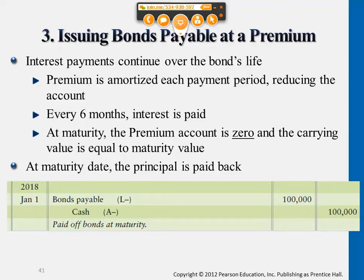For bonds, all three cases, the critical entry really is the interest entry. If companies issue the bond at par value — meaning the stated interest rate is the same as the market interest rate — then every half a year when they journalize interest, interest expense will be the same as the cash interest they're paying: $4,500. Because in the beginning there weren't any discounts or premiums; they wanted to borrow $100,000 and they actually did borrow that amount, so interest is simply $100,000 times 9% times half a year.